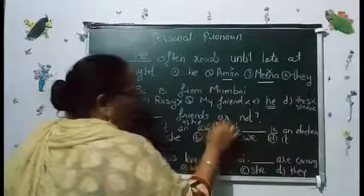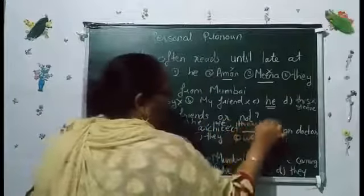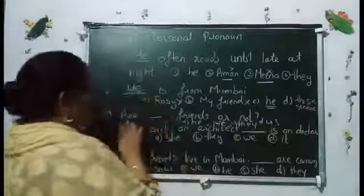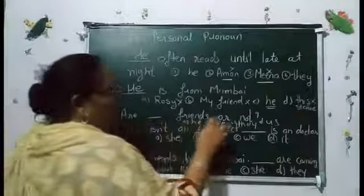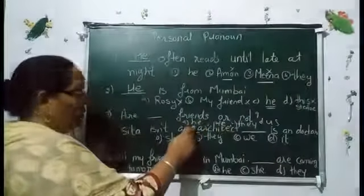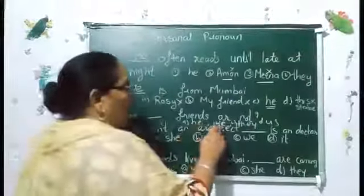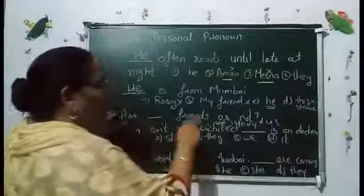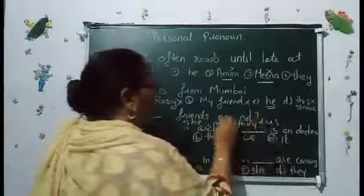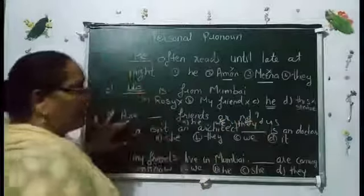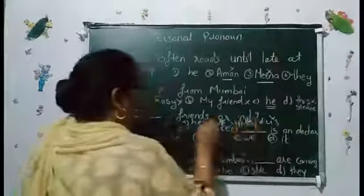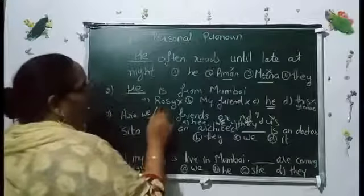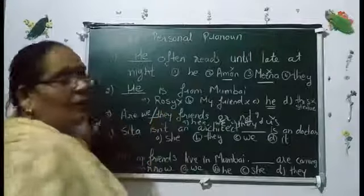We have options to choose: he, we, they, us. The question is: are those friends or not? 'He' is singular, so it won't work here. The correct answer is 'they' — Are they friends or not?